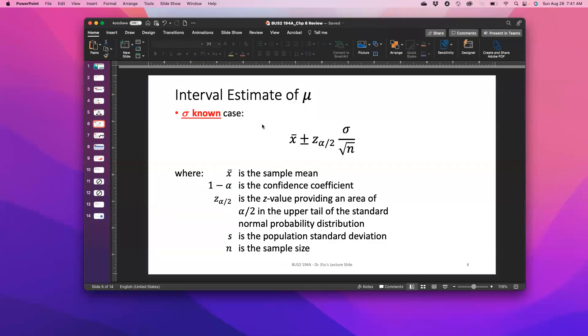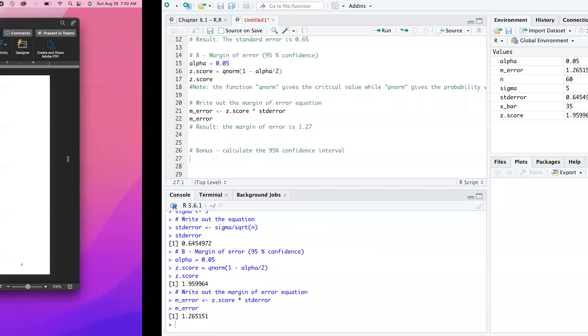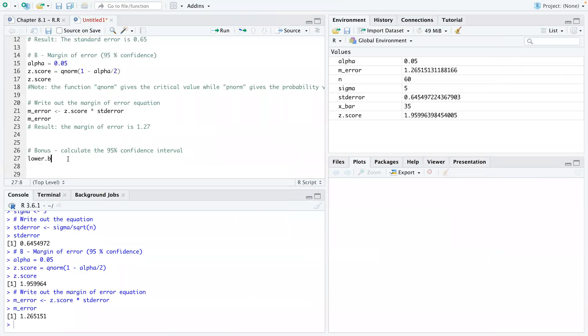So basically what we have here in this interval estimate is to calculate the lower bound and the upper bound. The lower bound would be when you have to subtract the margin of error from X bar. And the upper bound would be when you have to add the margin of error to X bar. So I'm just going to write out the equation as usual. Lower bound.